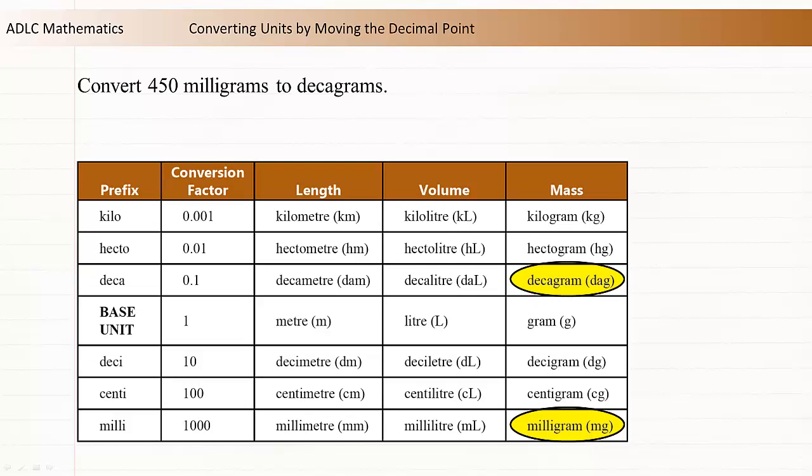Find milligrams and decagrams in the table. 1000 milligrams is equal to 0.1 decagrams. This strategy uses the equality version of the conversion ratio, so you don't have to determine a fraction equal to 1.